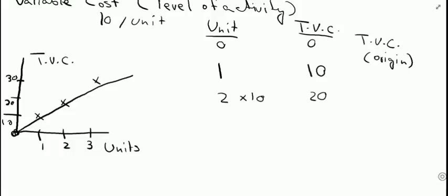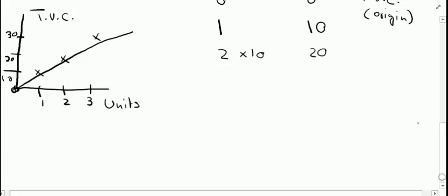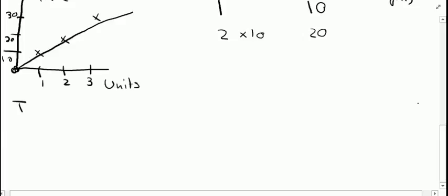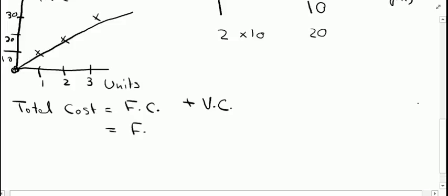Now if I add both graphs and make a graph of total cost: total cost equals fixed cost plus variable cost. To calculate total variable cost, I multiply the variable cost per unit by the number of units produced.